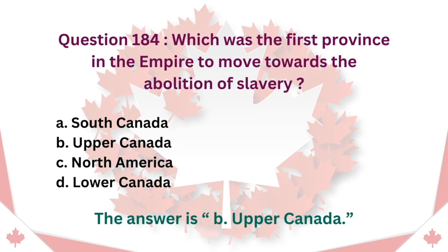Question 184: Which was the first province in the empire to move towards the abolition of slavery? A. South Canada. B. Upper Canada. C. North America. D. Lower Canada. The answer is B. Upper Canada.